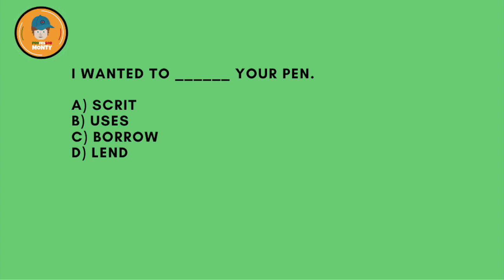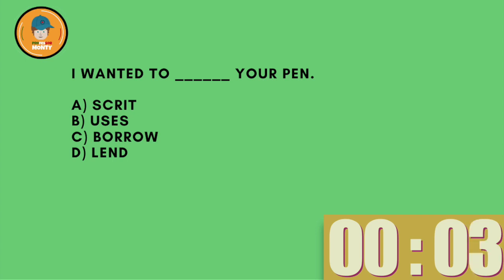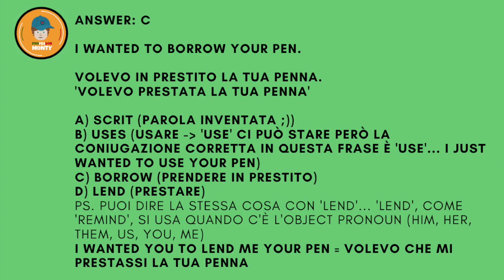I wanted to mmm your pen. A: screeped. B: uses. C: borrow. And the answer is C — I wanted to borrow your pen — because borrow is prendere in prestito, and lend is dare in prestito. You can read these tips to know when to use which one.